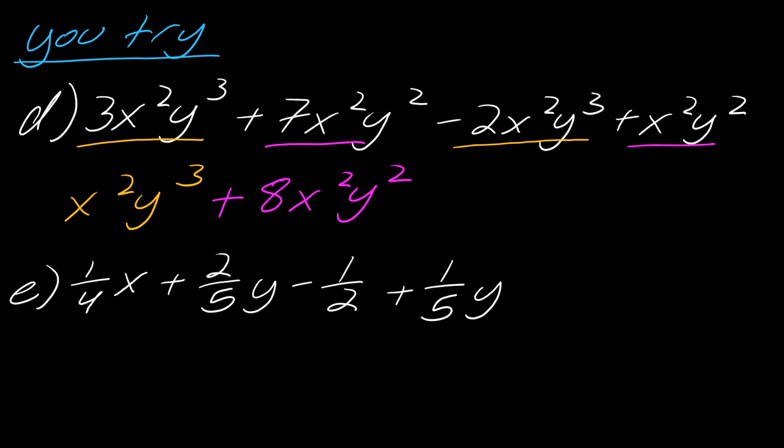And thankfully for this next one, this one's actually nice and straightforward. I've got this 1/4 x. There is no other x, so we're just, that's it. 1/4 x. And then let's see, I've got 2/5 y and 1/5 y, so same denominator. So 2/5 plus 1/5 will give me 3/5 y. And then we have this -1/2. There's no other term with it. So once again, just a reminder, if you had these in a slightly different order, that's fine, but the 1/2 definitely has to be negative. These have to be positive. These have to be the numbers attached to those letters. So that's what you're looking for.